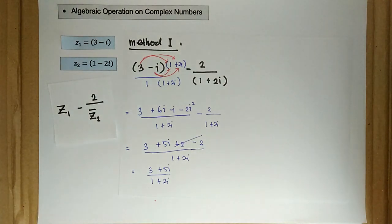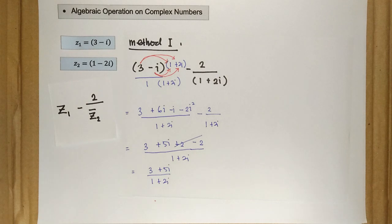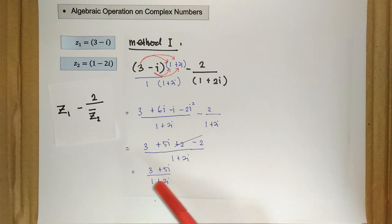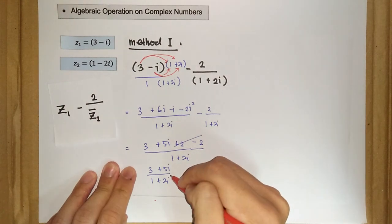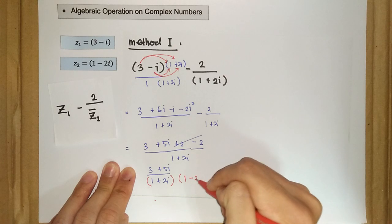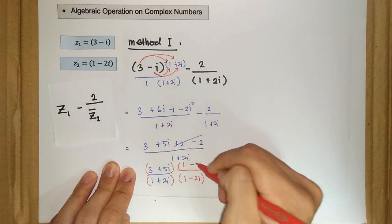What remains is just the division of two complex numbers. When dealing with division of complex numbers, the trick is to rationalize the denominator. We want to convert 1 plus 2i into a real number by multiplying by its complex conjugate, which is 1 minus 2i. We multiply both the numerator and denominator by 1 minus 2i.